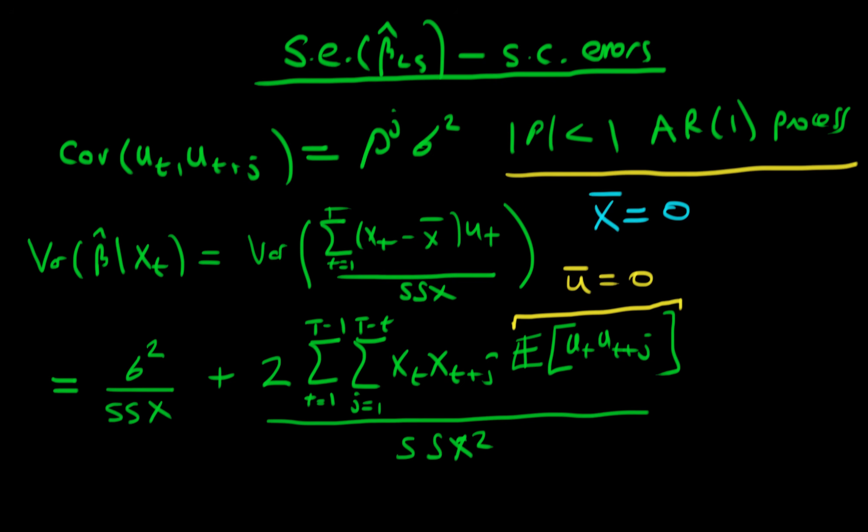Okay cool, and I have already stated a form for this actual expectation, this covariance term on the right hand side, so I'm going to replace that with what I actually said it was originally, which was we had this whole thing being equal to rho to the power j times sigma squared, and this is just this thing at the top here, so the sigma squared goes outside.